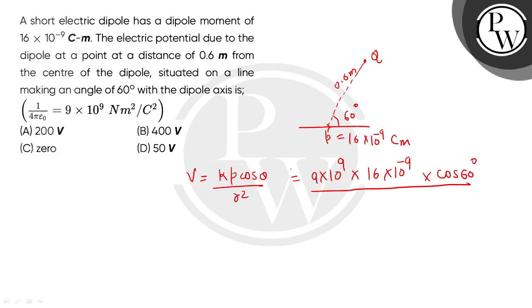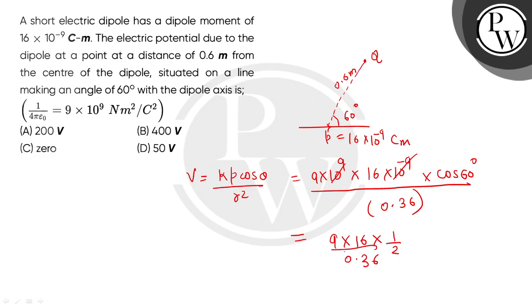The angle is with the dipole axis. And what is the value of r? r is 0.6 meters, so r² = 0.36. Now this will be 9 × 16 × cos 60° divided by 0.36.